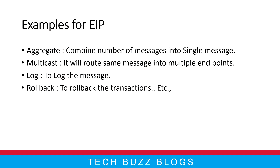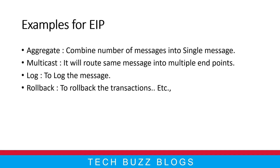You don't need to write a lot of code — you can just use the keyword 'aggregate' and follow some steps. Next, what is Multicast? It sends the same message to multiple endpoints. It is the reverse of aggregate: you have one message and you need to pass it to multiple endpoints or multiple routers in different places. Then you can use Multicast.